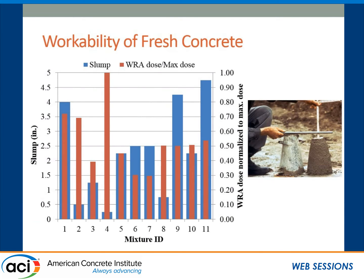In this study, we tested workability and 28-day compressive strength, as these are the two requirements that Texas DOT has in their specification. In a paving job, the target slump is around 1 to 1.5 inches, so our target was to achieve slump more than one inch. This graph shows the slump value on the left vertical axis in blue, and the right vertical axis shows the water-reducing admixture dose normalized to the maximum dose. For eight concrete mixes out of 11, we were able to achieve that target. A normalized dose of 0.5, for example, means we used the water-reducing admixture at half the maximum dose. Eight out of 11 mixtures achieved at least one inch slump.